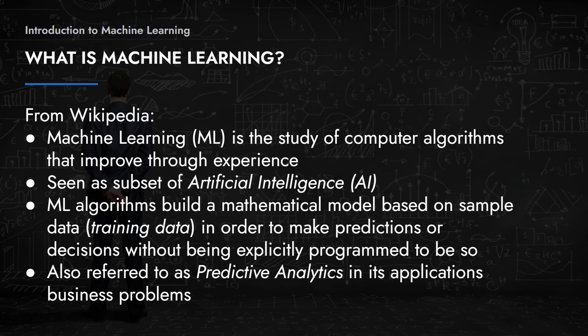Machine learning is generally accepted to fall under the umbrella of AI. Basically, a machine learning algorithm builds a mathematical model based on sample data — called the training dataset or training data. The aim is for the program based on that algorithm to start making predictions or decisions without being explicitly programmed to do so — essentially learning from data, pulling in patterns and understandings that allow it to make decisions it wasn't explicitly programmed to make.